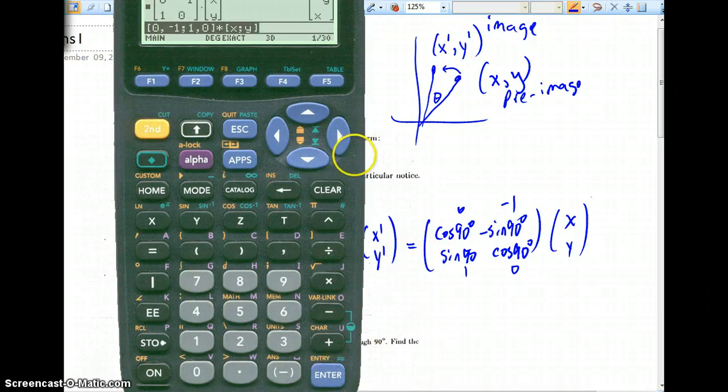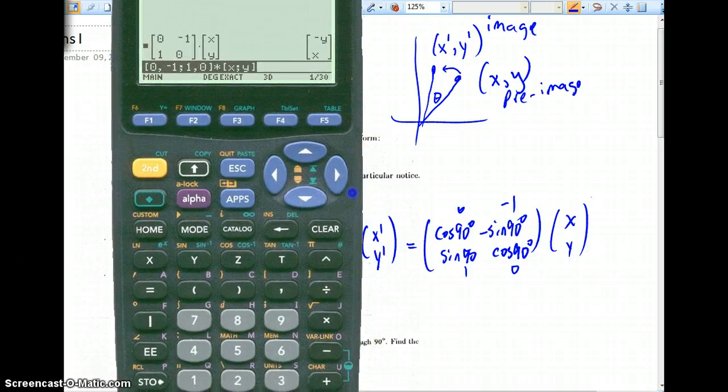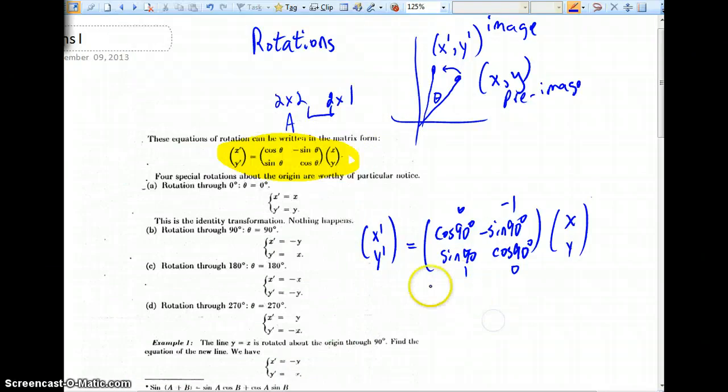Hit enter. What are we seeing? Opposite y, x. Of course we could do this by hand also. I think it's even more quick to do that. But what are we seeing? We're seeing this is the matrix form.